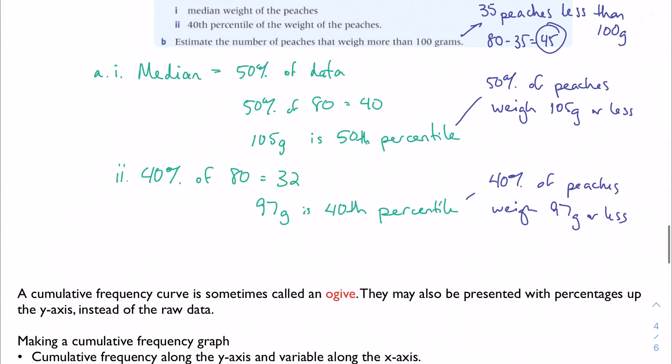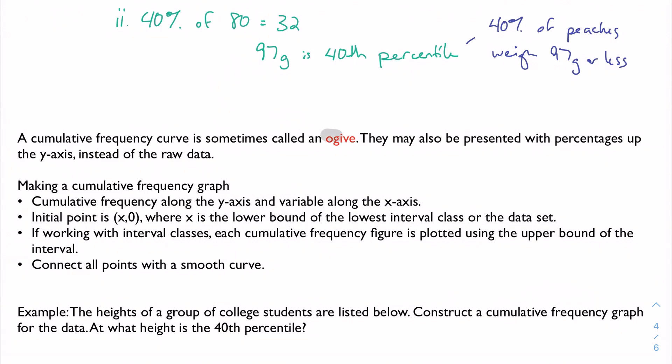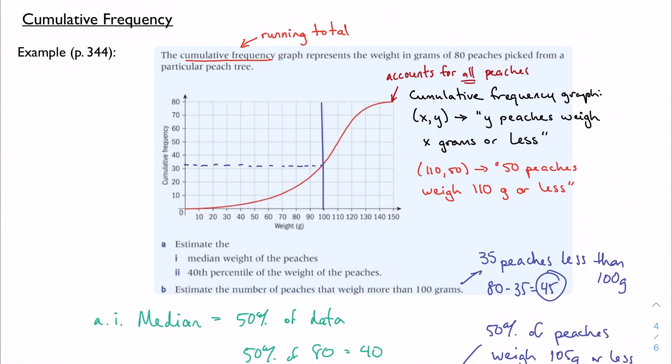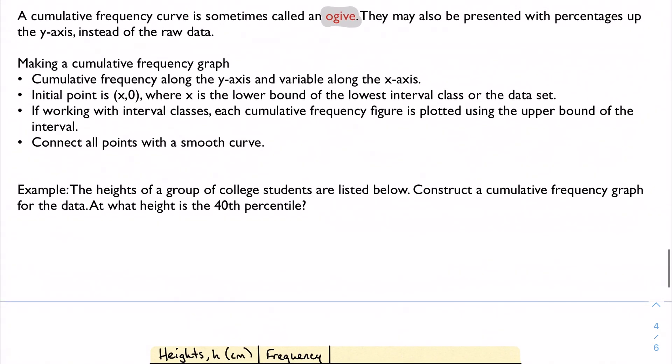Sometimes these curves are called ogives, and sometimes you'll see percentages instead of actually raw numbers. So in order to make a cumulative frequency graph, let's look at our example back up here. We notice that the cumulative frequency is on the y-axis right here and our data or our measurement is along the x-axis. The initial point, if I have interval classes, it's the lowest bound of the lower interval class. If I have raw data, it's just the lowest data that I have. Each cumulative frequency figure is plotted using the upper bound every time. So if my class went from like 20 to 34, I'm going to have 34 on my x-axis and then whatever the measurement is on y, the frequency. Connect all points with a smooth curve just as you've seen above.